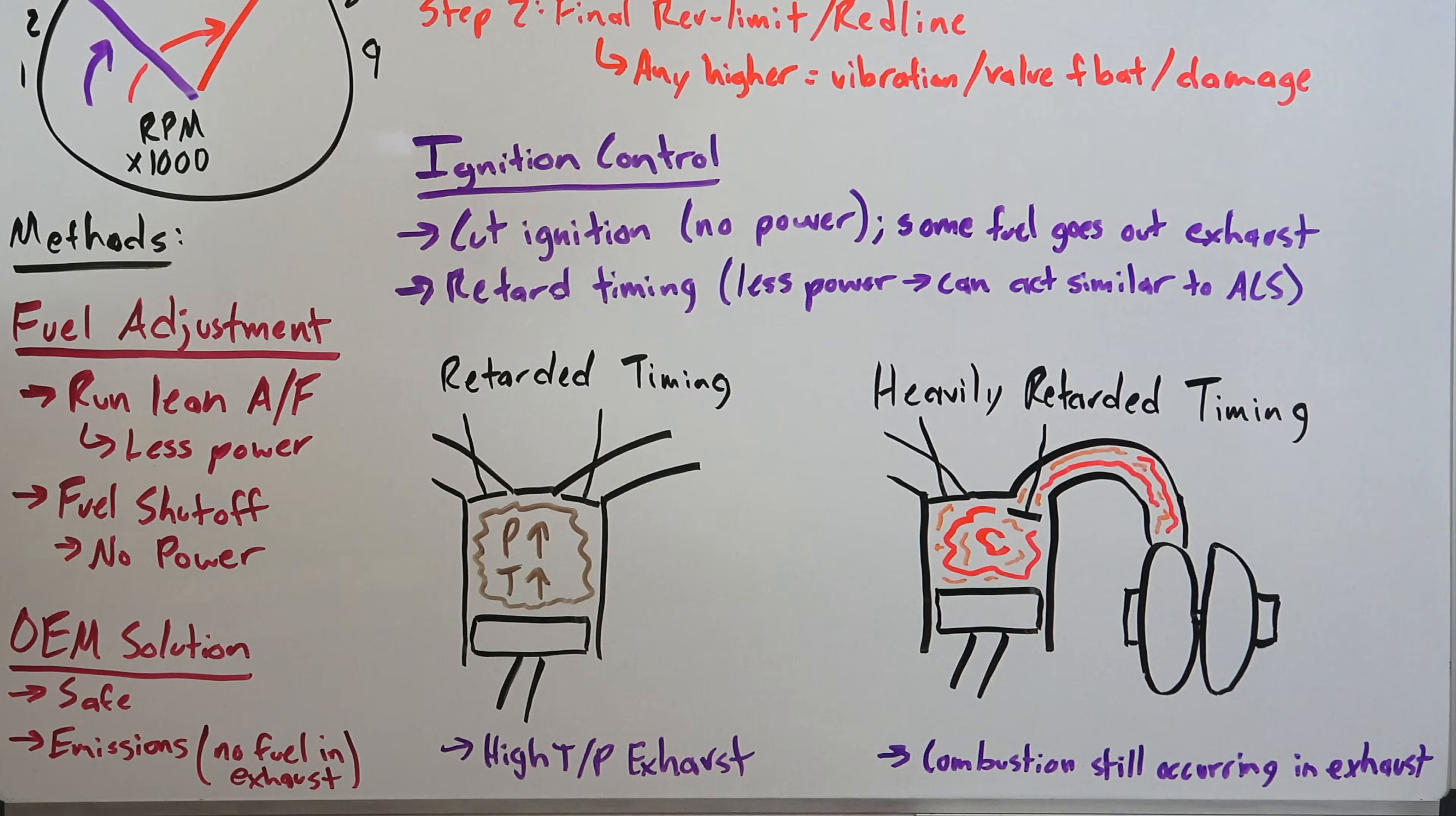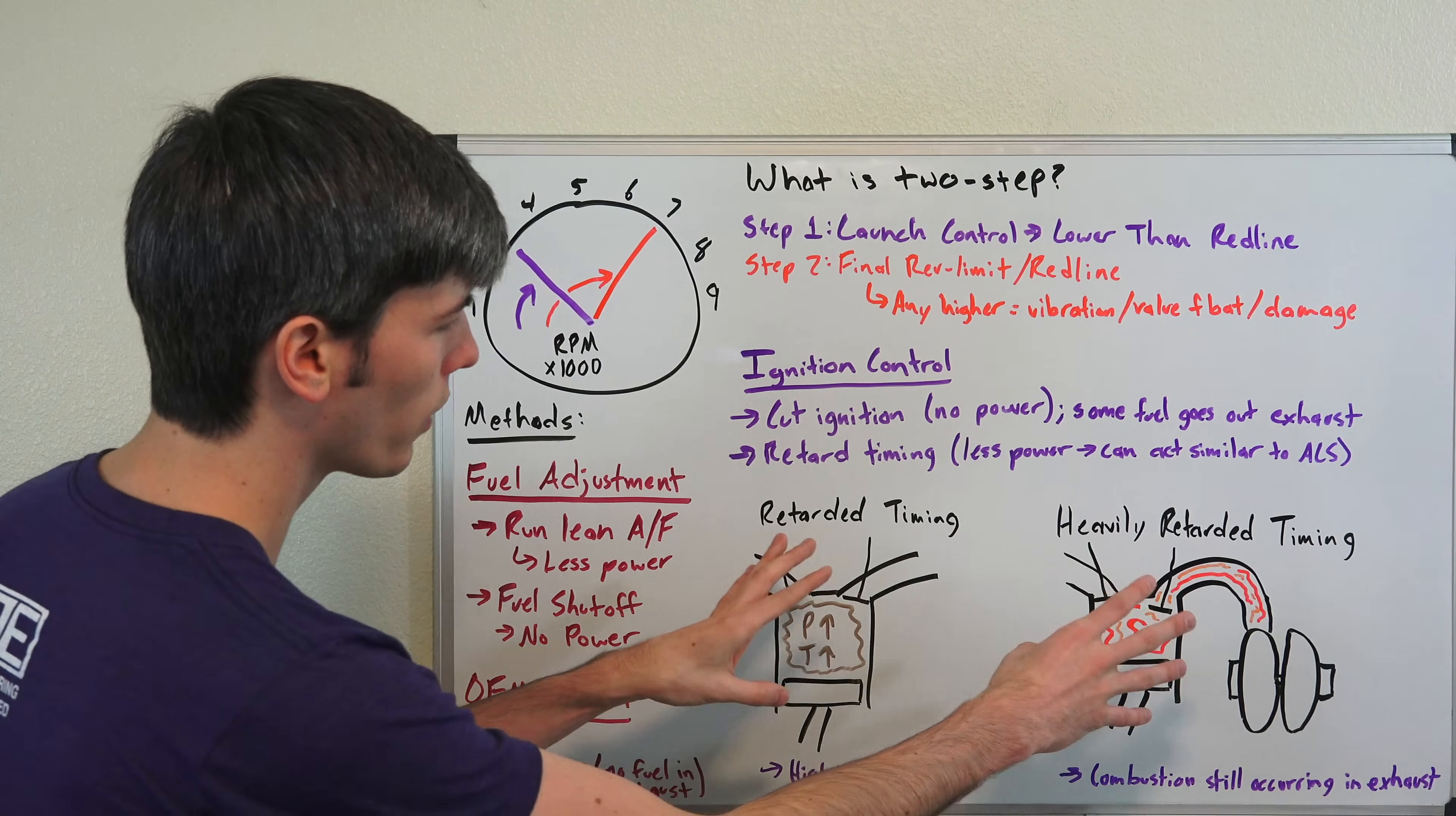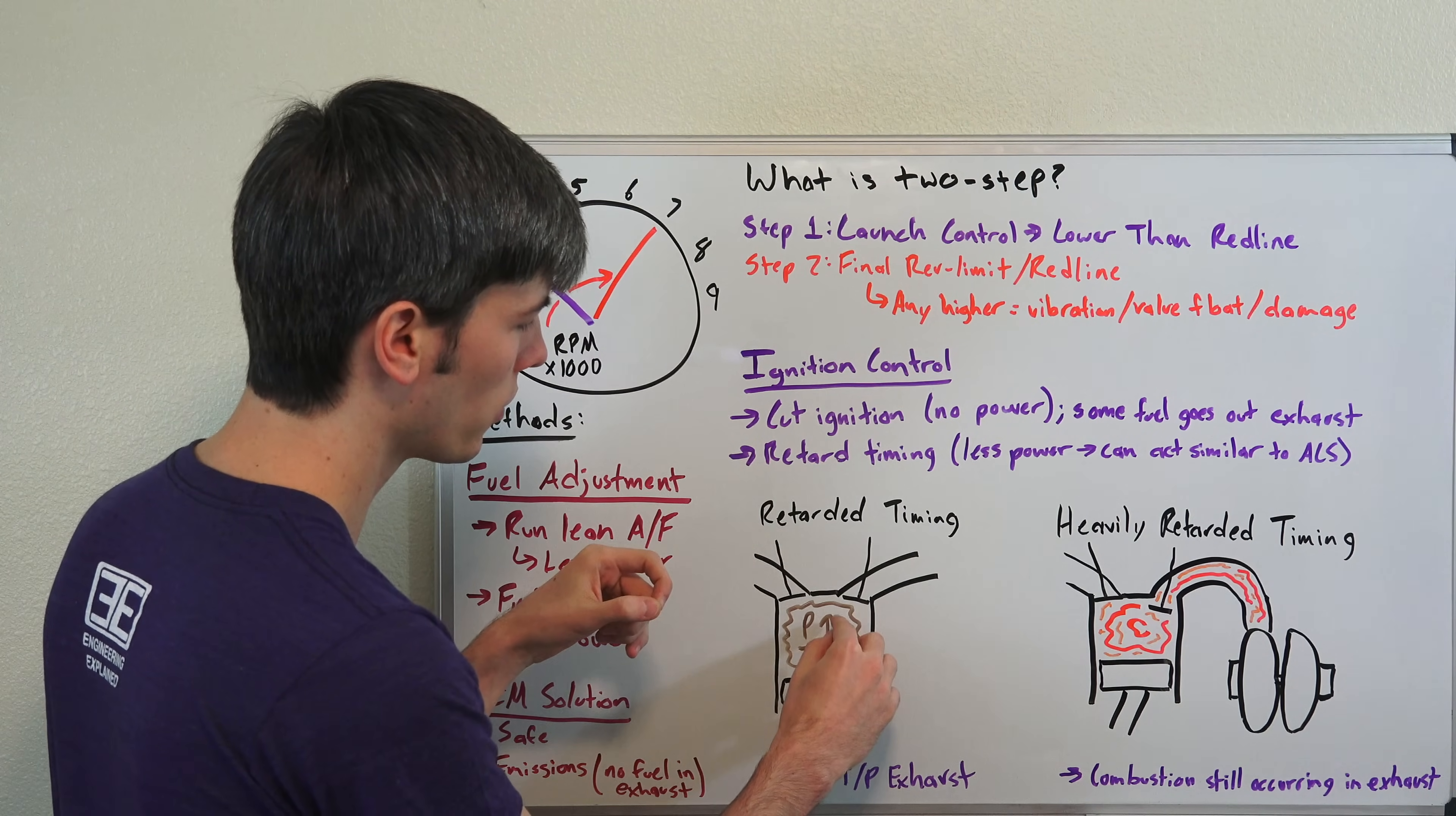Now this is where two-step rev limiters start to get confused with anti-lag systems. Two-step rev limiters, by design, are not anti-lag systems, but they operate in a very similar fashion, and they can have that as a result of the way that they operate. So there's two different ways we're going to look at this. But basically, when you're retarding the timing, that means when your piston has reached bottom dead center, you're still going to have a high amount of pressure and a high amount of temperature. That's all that wasted work, because you didn't optimize when you ignited that spark.